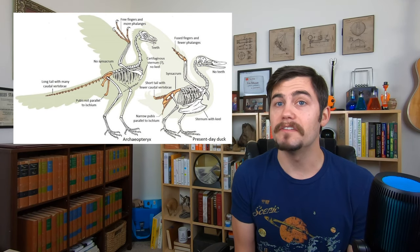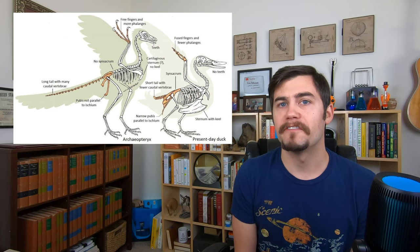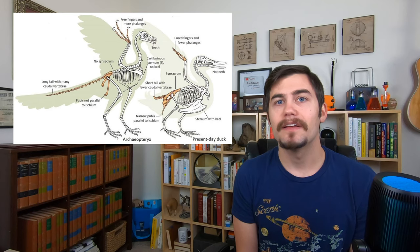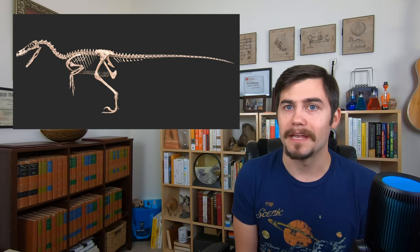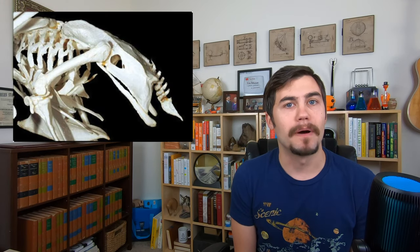Archaeopteryx also has unfused fingers with distinct claws. Modern birds almost all have finger bones that are fused at the tip and no claws. Archaeopteryx also has the pelvic structure of a theropod — the three bones of the pelvis, the ilium, ischium, and pubis, are structured completely differently in theropods and Archaeopteryx than they are in modern birds. So was it even a bird? Yes — Archaeopteryx had feathers specifically for gliding. We don't know how well it could fly under its own power, but it was a bird. This goes back to the idea that there was no true first of any species — it doesn't look like what we think a bird is, but it's a bird.